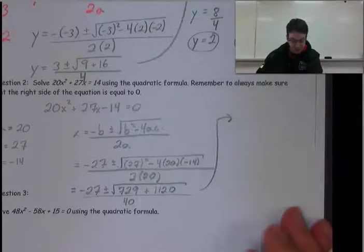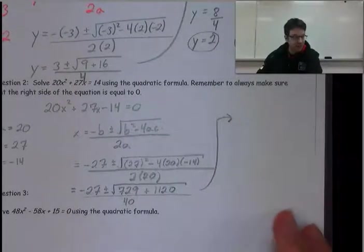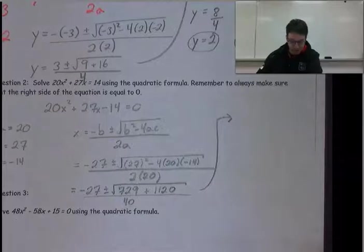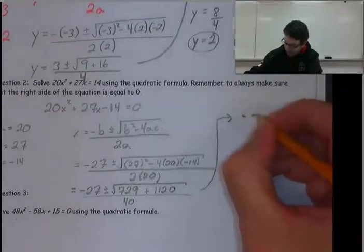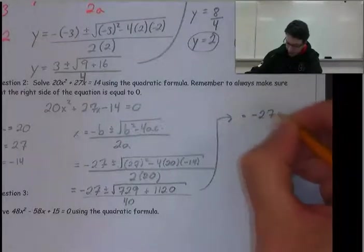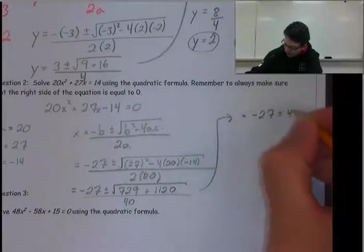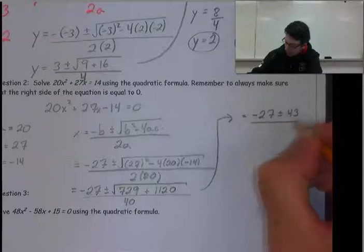27² is 729. Here's a double negative, so we're going to add the product of those three, which is 1,120. That's all divided by 2 × 20, which is 40.